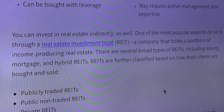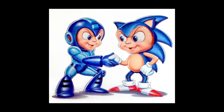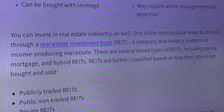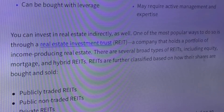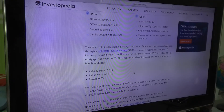You can invest in real estate indirectly as well. One of the most popular ways to do so is through a Real Estate Investment Trust — I trust you with this real estate. A company that holds a portfolio of income-producing real estate. There are several broad types of REITs, including equity, mortgage, and hybrid REITs. REITs are further classified based on how their shares are bought and sold: publicly traded, public non-traded, and private. Maybe you need a better acronym — it doesn't roll off the tongue that well.